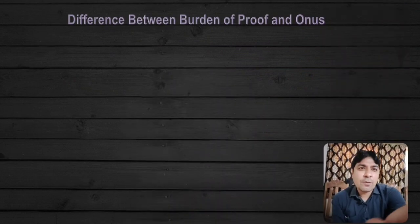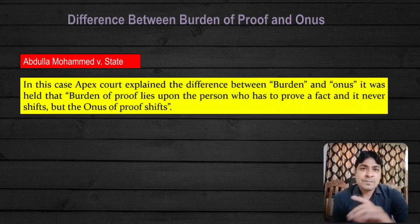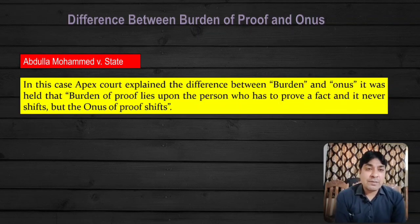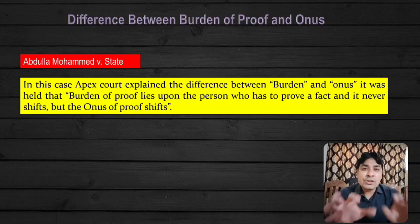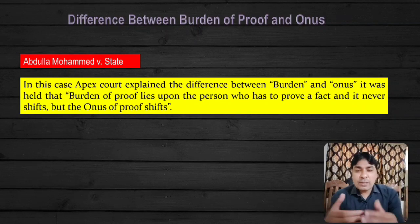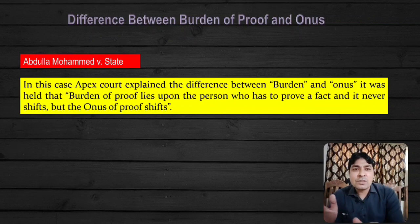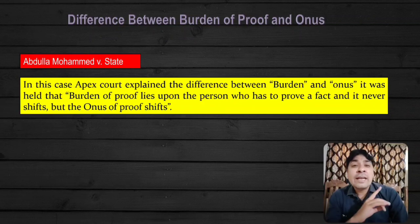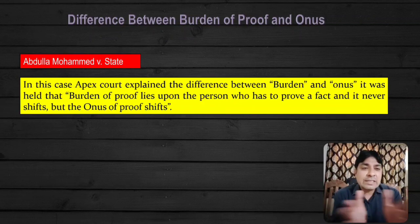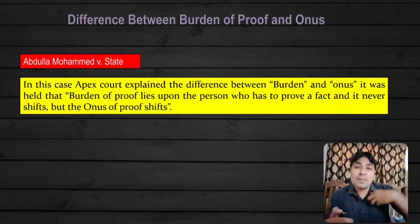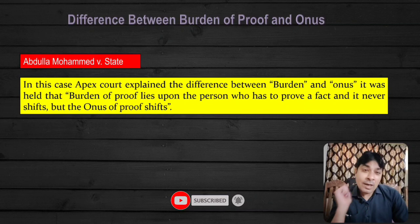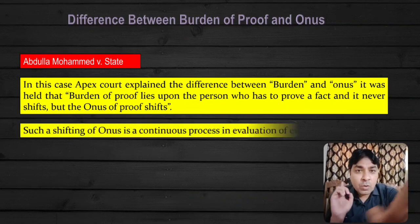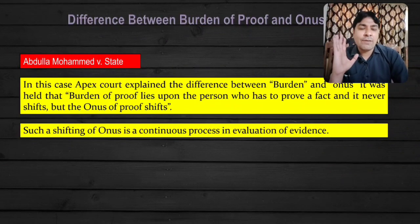Now there is a difference between burden of proof and onus. In Abdullah Muhammad versus State, the Apex Court explained the difference between burden and onus. It was held that burden of proof lies upon the person who has to prove a fact and it never shifts, but the onus of proof shifts. The court says that the burden of proof lies on the person who has to prove a fact and it never shifts at all, but the onus of proof shifts. Such a shifting of onus is a continuous process in evaluation of evidence.